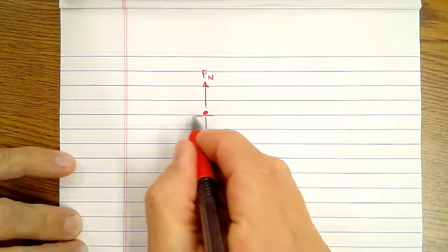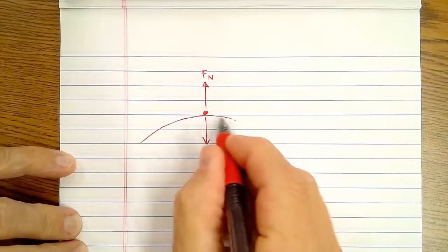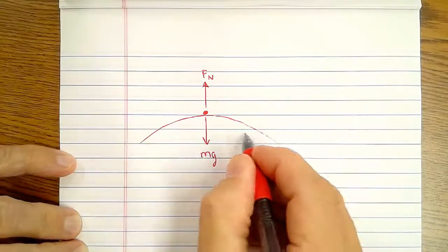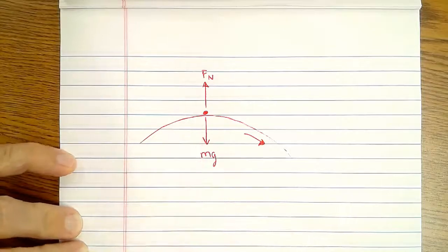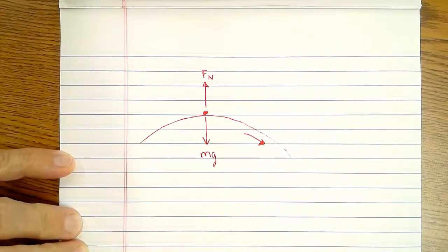But that's not quite true, because if you are on the Earth and the Earth is spinning, then this object is moving in a circle and so it is accelerating.